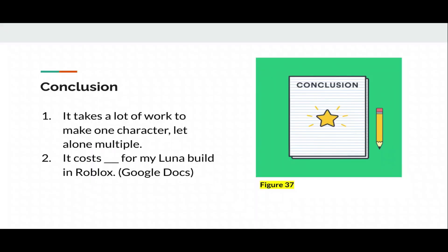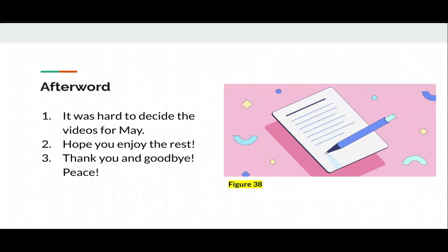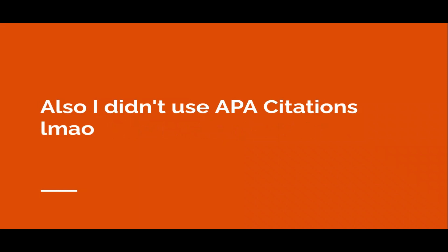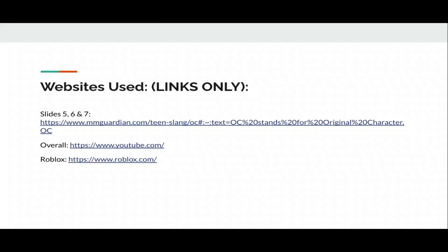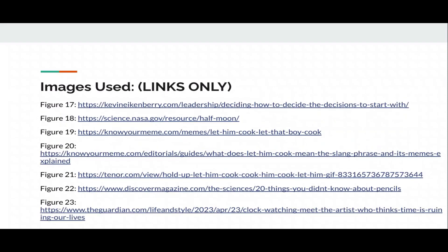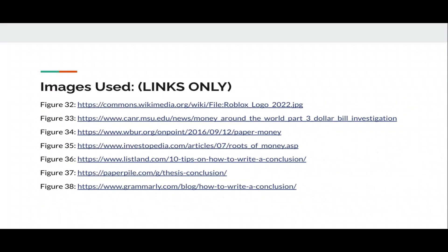Chapter 6, conclusion and afterward. It takes a lot of work to make one character, alone multiple. And as you saw in my Google Docs, it costs a lot for my Luna build in Roblox. Afterward, it was hard to decide the videos for May. Hope you enjoyed the rest. Thank you and goodbye. And peace. Now leave unless you want to see Roblox ending credits. Also I didn't use APA citations. Lol. Elmao. So this is all the links, sources. If you want any sources, tell me down below. I can get them to you. That's it. Bye bye bye.